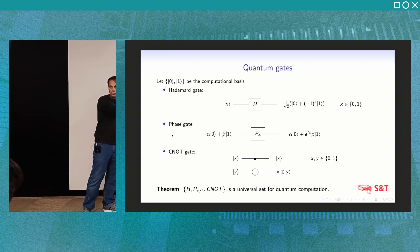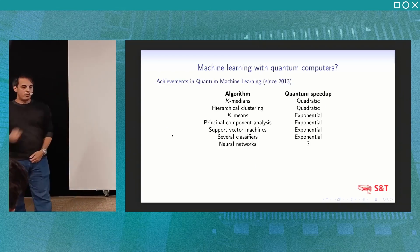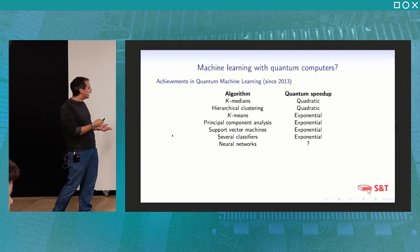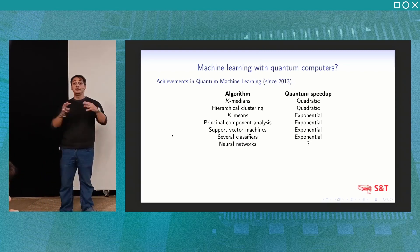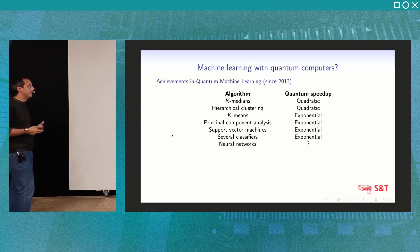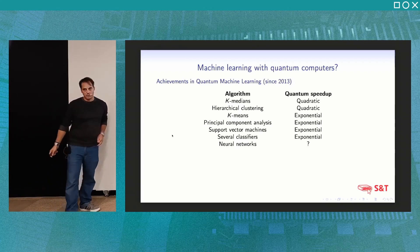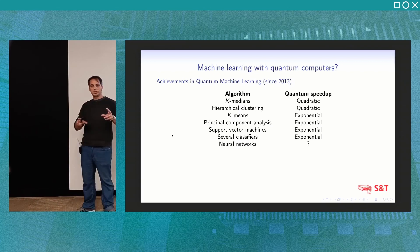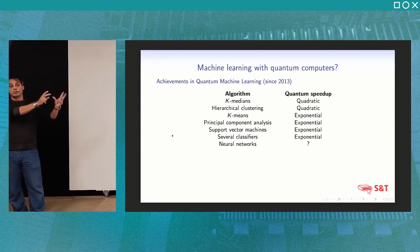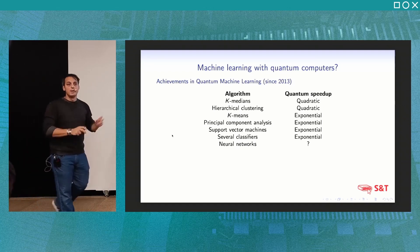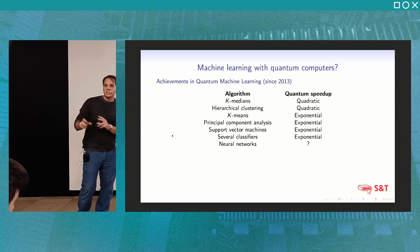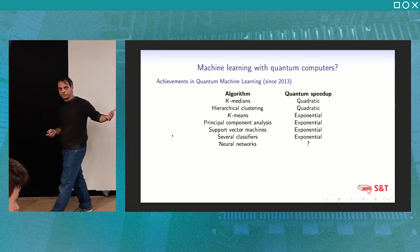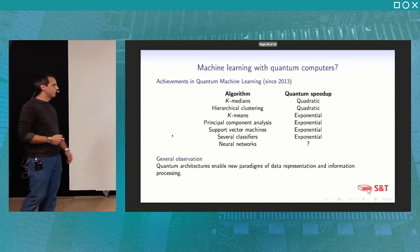The topic for us now is machine learning with quantum computers. We have a list of main theoretical achievements in quantum machine learning algorithms basically since 2013 — well-known machine learning algorithms enhanced by quantum encoding of classical data into quantum states, combined with quantum circuits. We can achieve quantum speedup with respect to classical counterparts. I stress these are theoretical results.